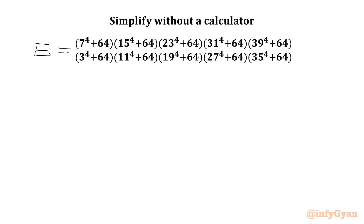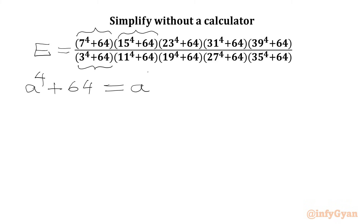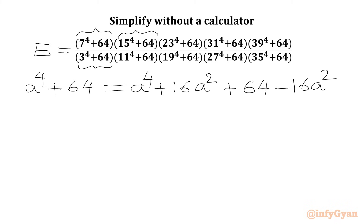In the numerator and denominator we have the general form a⁴ + 64. Let's find out the factorization of this expression first. Using Sophie Germain identity, I will add and subtract 16a². So we add 16a², then subtract 16a², and we have plus 64. From these three terms we can write this as a perfect square of (a² + 8).